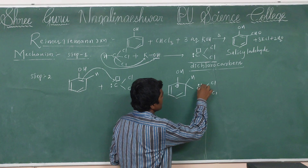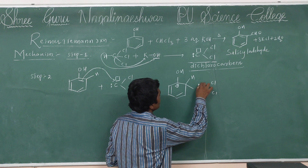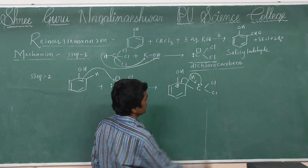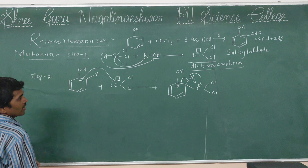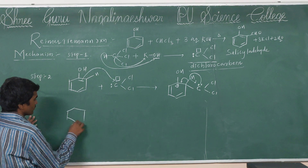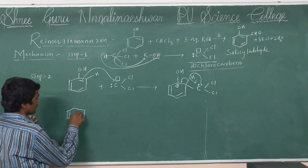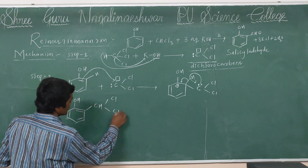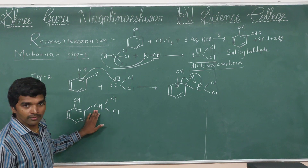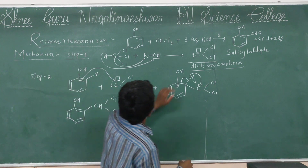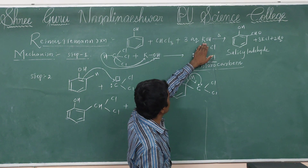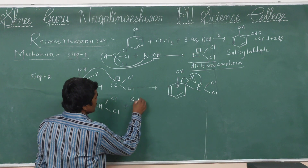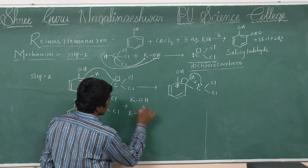This carbon has one excess lone pair of electrons which can accept the proton. A carbocation is formed, then the bond shifts inside. We took three moles of aqueous KOH. One KOH was utilised in the first step. The remaining two OH groups are available. So here I am taking two KOH.